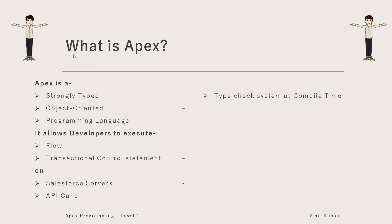With 'strongly typed' we mean a type-check system at compile time. It means if we write Apex code and compile it, it will check the various types that are available in it during compilation itself. In case of any type mismatch or any kind of error, it will report it at that very moment.